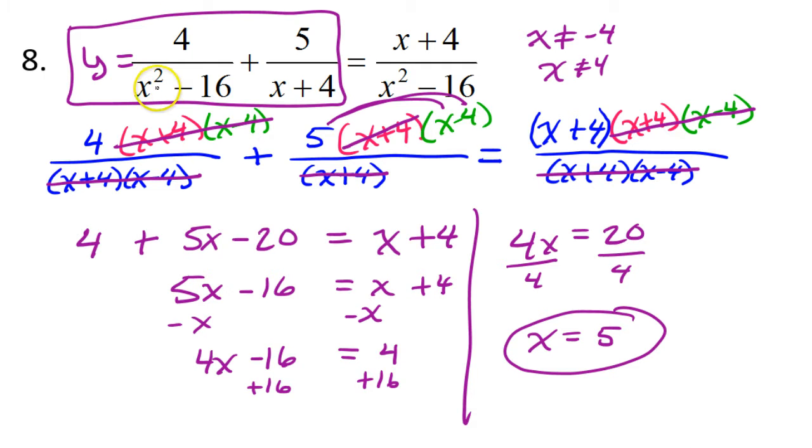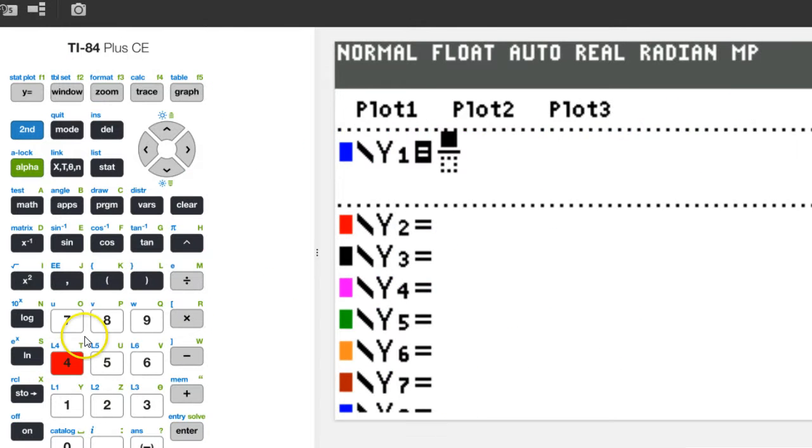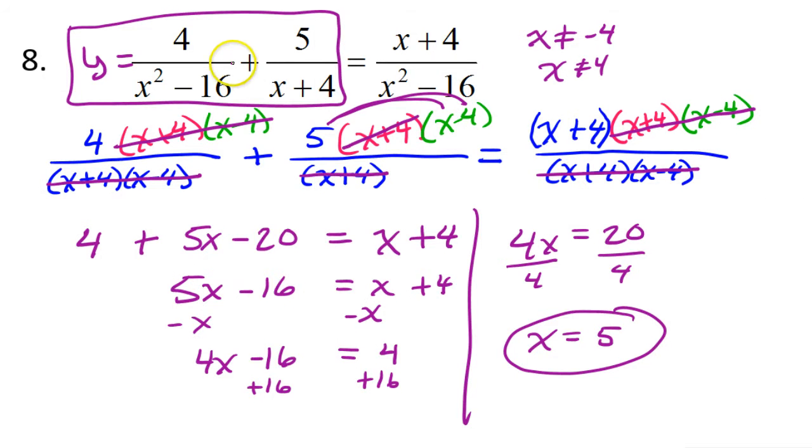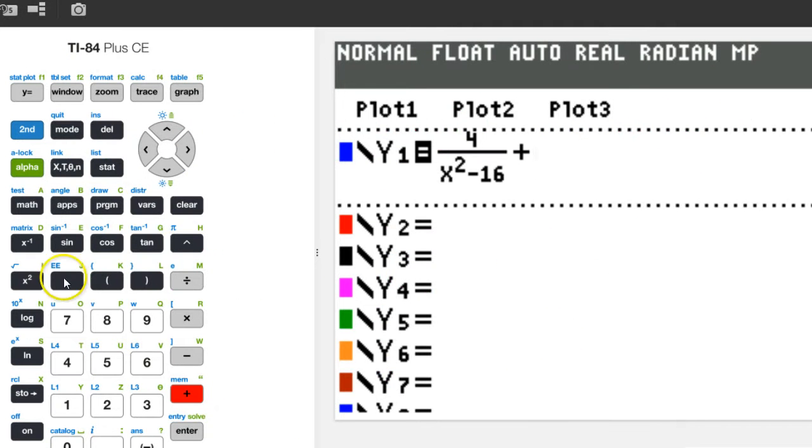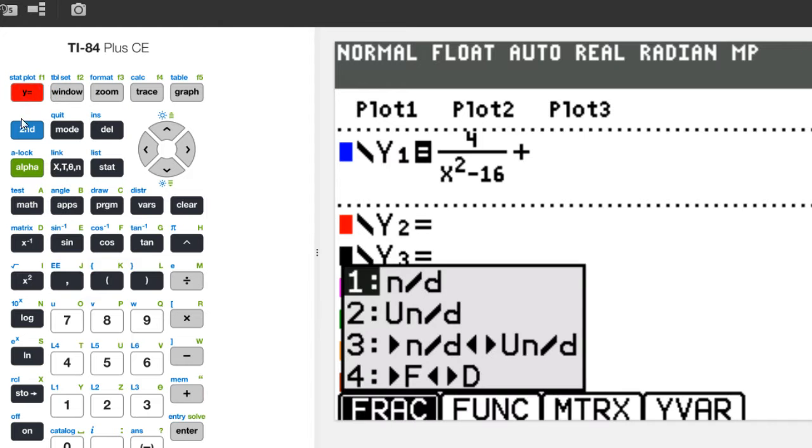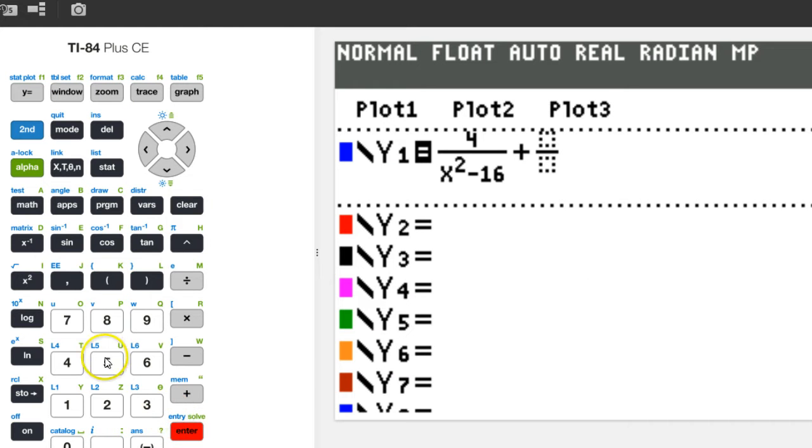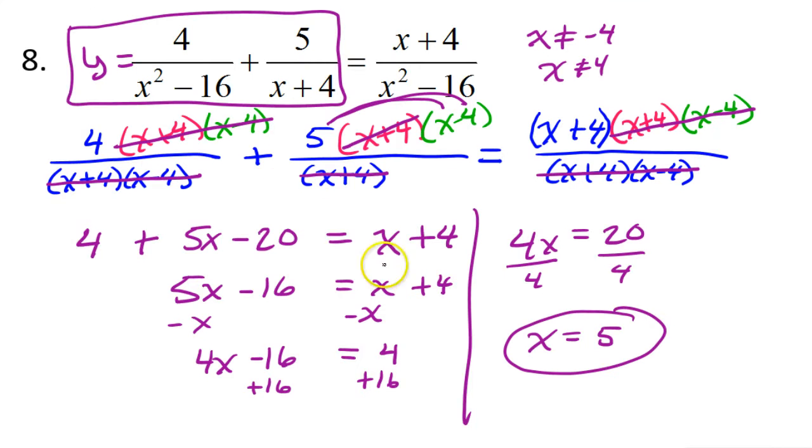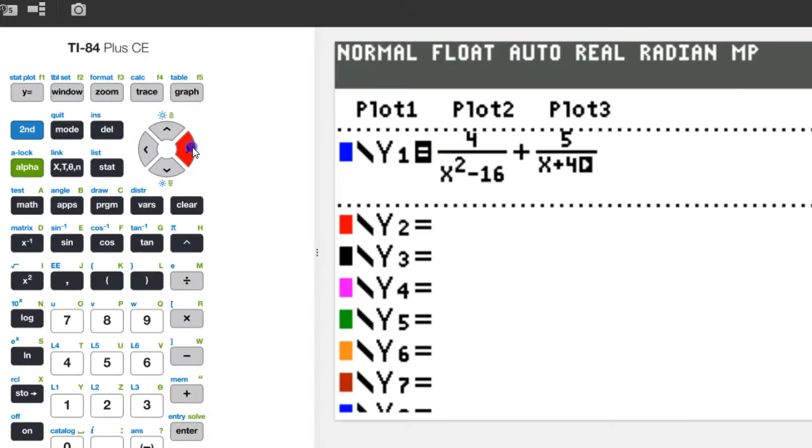Now, the first fraction is 4 over x squared minus 16. So, 4 over x squared minus 16. But there's more to it. Plus 5 over x plus 4. And I need fraction mode again. 5 over x plus 4. Okay, that is the first function. I'm going to go ahead and hit graph and take a look and see what it looks like.